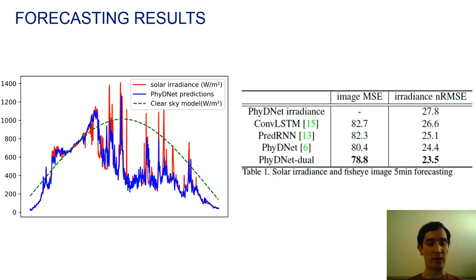We show here qualitative results on the left figure with a 5-minute prediction on a particular day. We can see that our model accurately predicts the sharp variation of irradiance over time. And on the right, you can see the table that shows quantitative results with respect to competitive baselines, a ConvLSTM, a PredRNN, and PhyDNet.